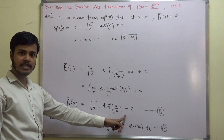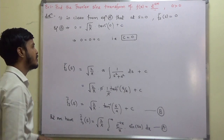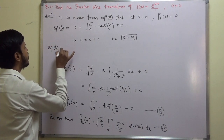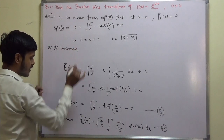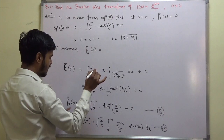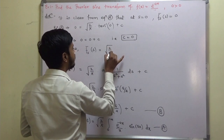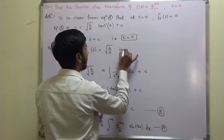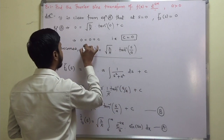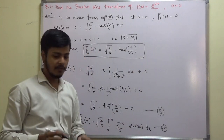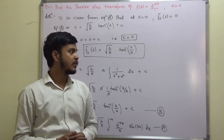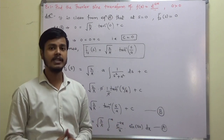Putting c = 0 in equation (b), equation (b) becomes: the Fourier sine transform of the given function is sqrt(2/pi) times tan⁻¹(s/a). This is the required Fourier sine transform for the given function. I hope this video lecture is clear to you. Thank you for watching this learning video and enjoy learning mathematics.